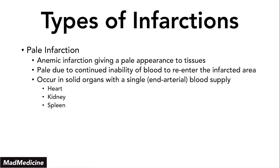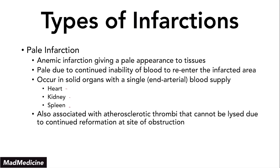These are very dangerous infarctions, especially for the heart, the kidney, and the spleen. They are highly associated with atherosclerotic thrombi because atherosclerotic thrombi cannot be lysed and continue to reform at the site of obstruction. Even though you can remove part of the thrombi, you're still going through the clotting cascade, which leads to reformation of the thrombus and continued obstruction — especially in an organ with a single arterial supply. That's why the heart is so susceptible to this kind of damage.